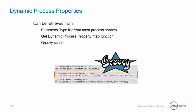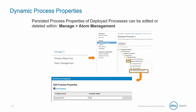You can also retrieve a dynamic process property using GroovyScript. Dynamic process properties can also be persisted.